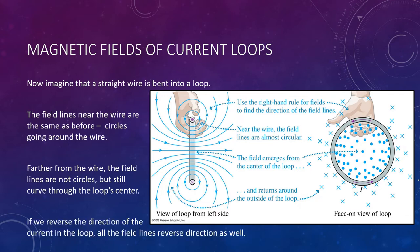If we reverse the direction of current, the diagram doesn't change fundamentally — all directions just flip. A counterclockwise direction becomes clockwise, and the X's and dots swap.